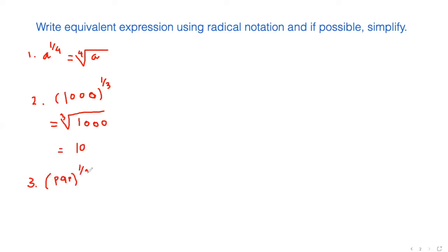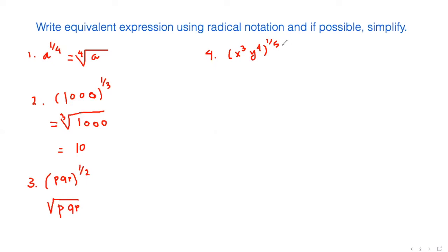Number three is p, q, r to the power half. To the power half means a simple square root, because the index is 2, which we don't write explicitly. So it's the square root of p, q, r. Number four is x cubed, y to the power 4, and then the whole thing to the power one fifth. In this case our index is 5, so we write the 5th root of x to the power 3 and y to the power 4.